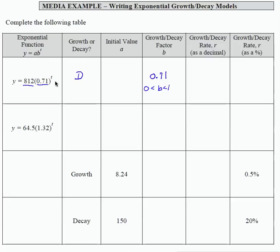My a is right here. That's my initial value, that's 812. Because I have a decay equation, to find the rate of decay, I need to subtract the b value from 1. If I do that, I get 0.29, which is my decimal representation for the rate of decay.